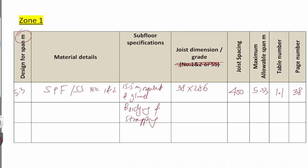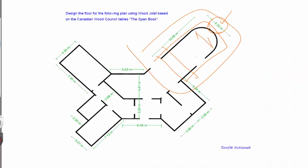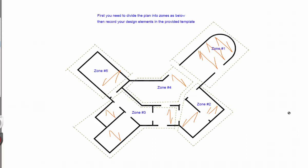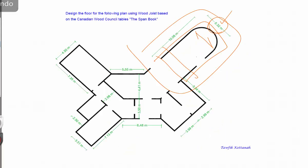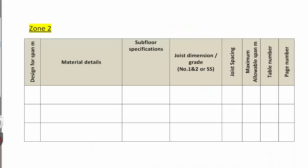Zone number two will have two spans. One span is this distance and the other span is this distance. Let's see what these spans are: this one is 2.99 and the other is 3.99.